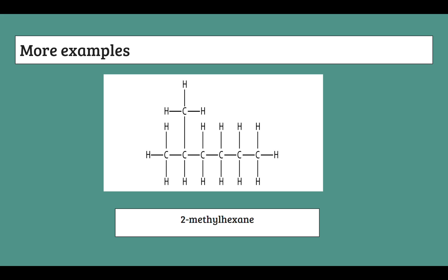Branched molecules aren't really necessary for you to know at IGCSE level, but it's a bit of extra knowledge. Other than that, that's basically the extent of IGCSE organic molecule naming — it's really not that complicated. The hardest part is probably wrapping your head around isomerism, so I'd recommend practicing finding isomers. Hopefully you found this video helpful. See you in the next one.